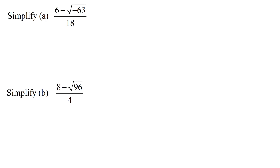Looking at the first example, I have 6 minus the square root of negative 63, all divided by 18. Now be very careful with expressions that look like this. It is so tempting to reduce the 6 with the 18, but 6 is not a common factor of the whole numerator, so I cannot reduce this 6 and this 18.